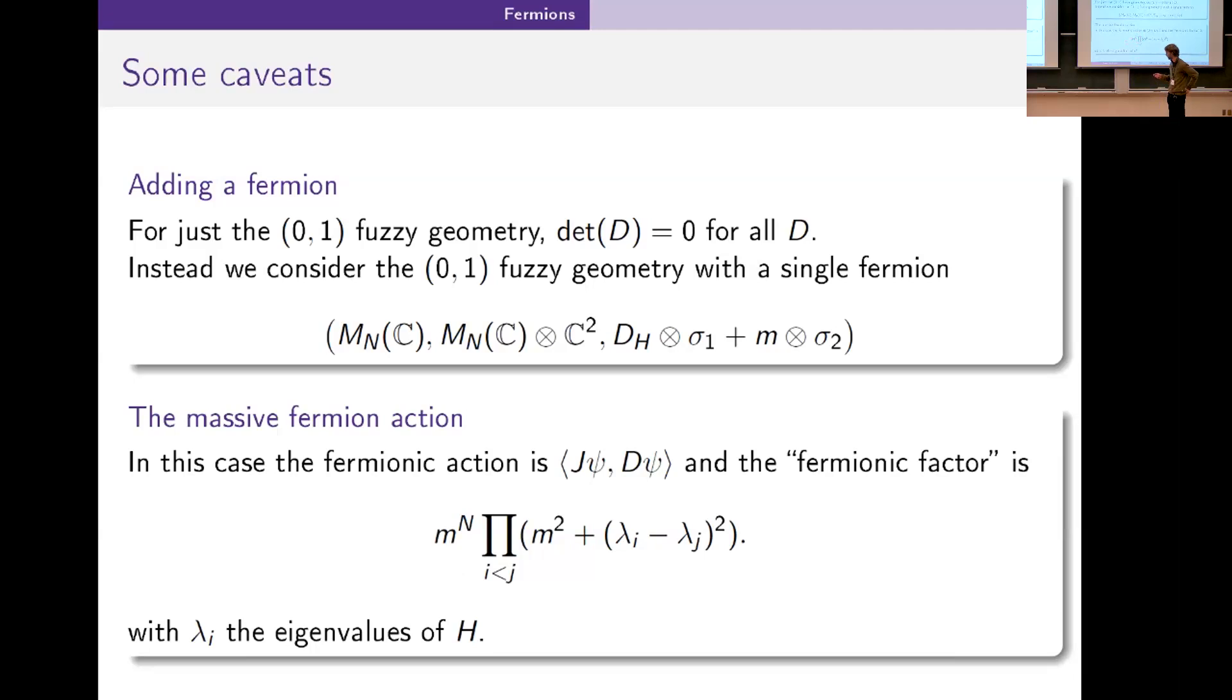Here you see also something Masoud pointed out. We're using J ψ D ψ instead of ψ D ψ. This is to get the Pfaffian instead of the determinant, which a priori we consider slightly more realistic. This is mostly due to a fermion doubling-like phenomenon. We get by adding the massive term. We need to double up the fermion space even though we didn't set out to do this.